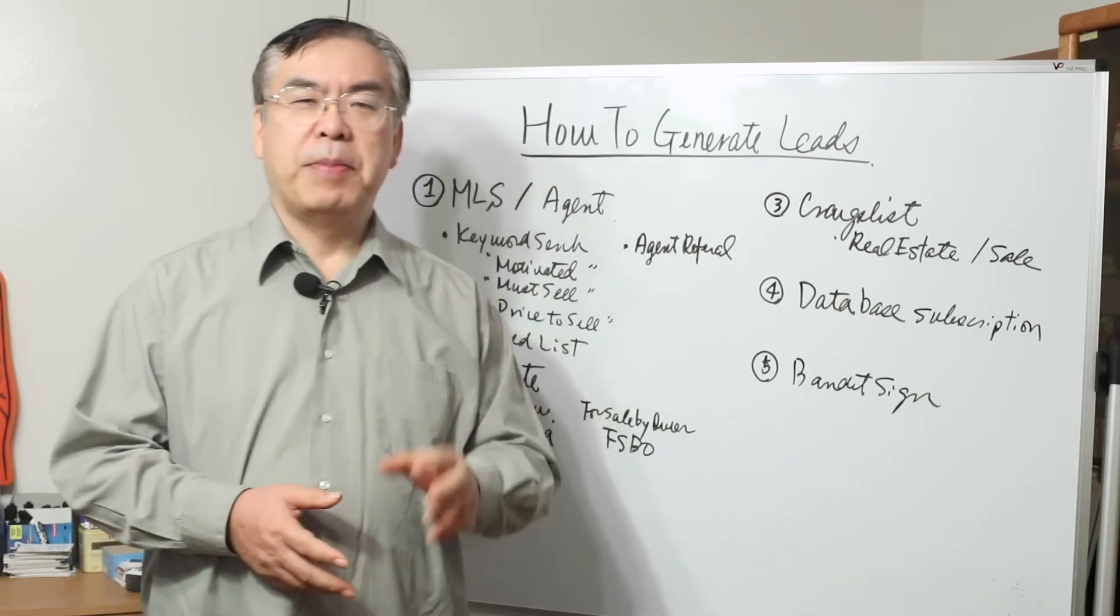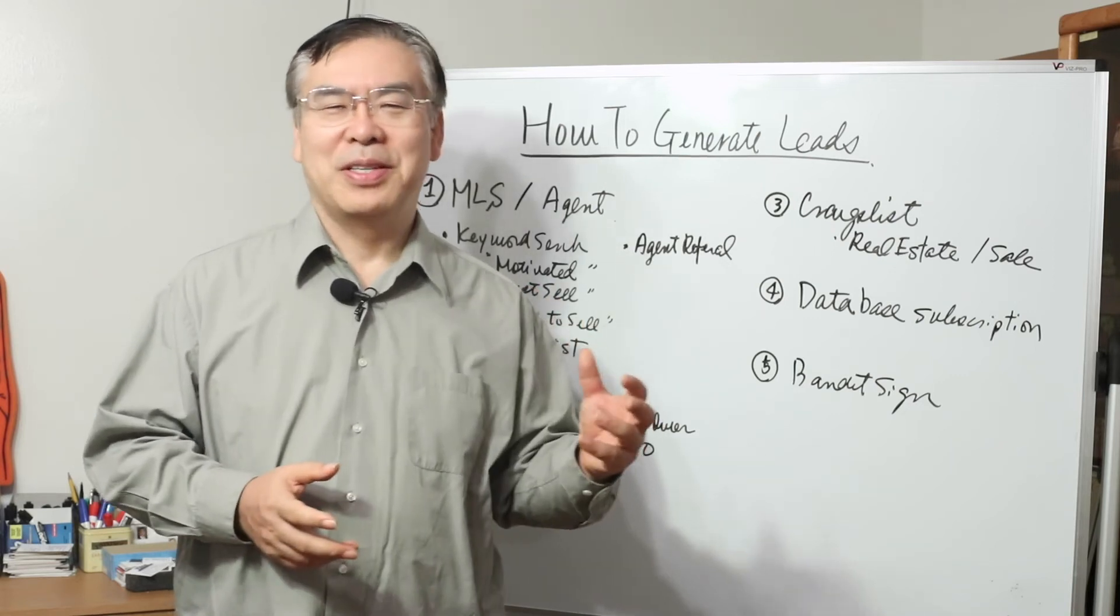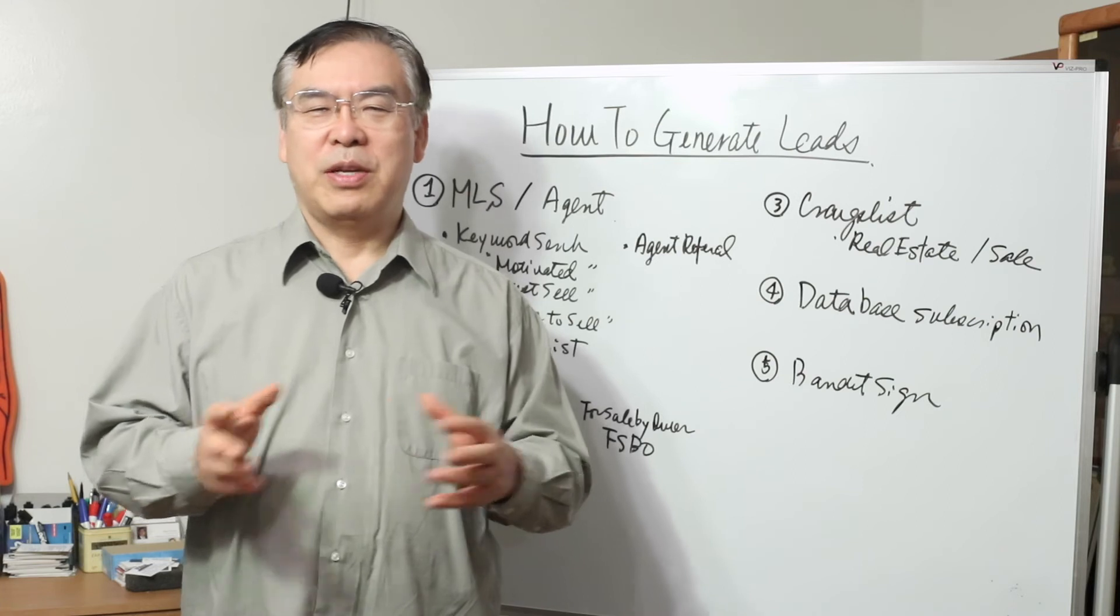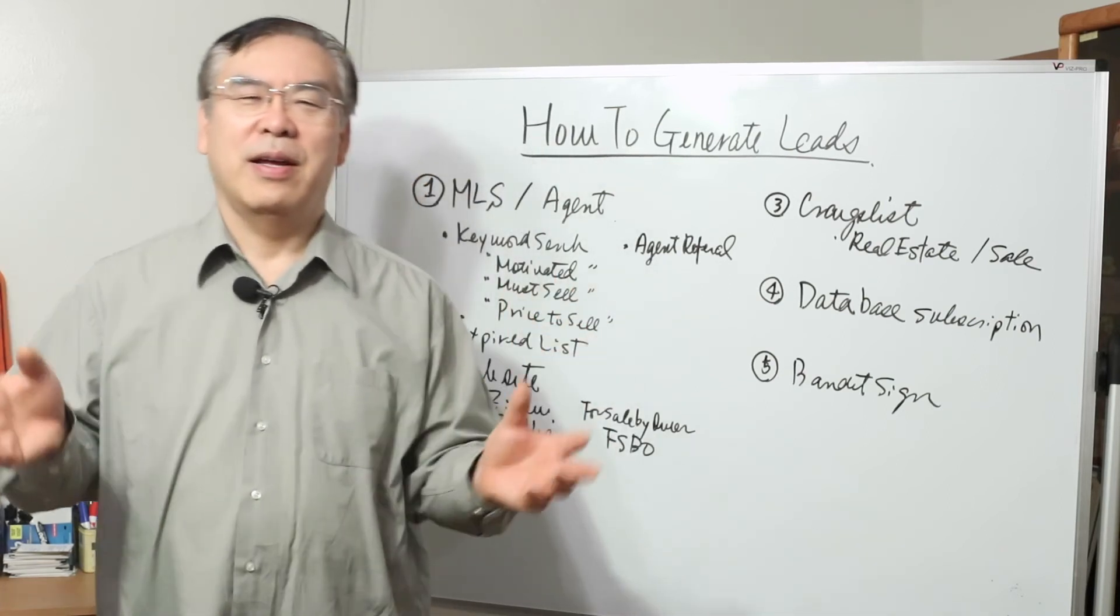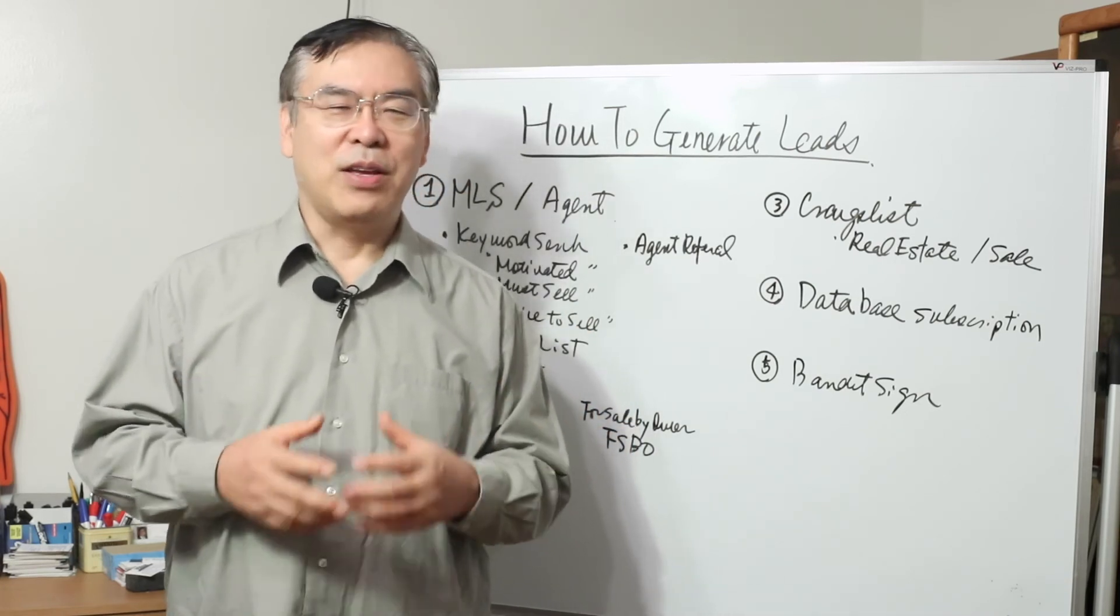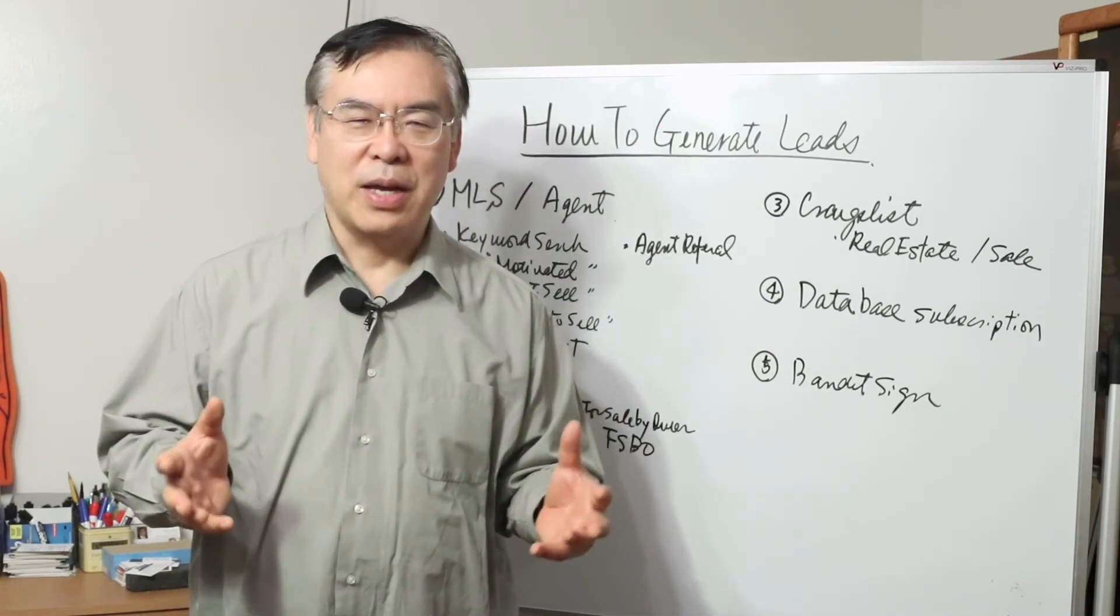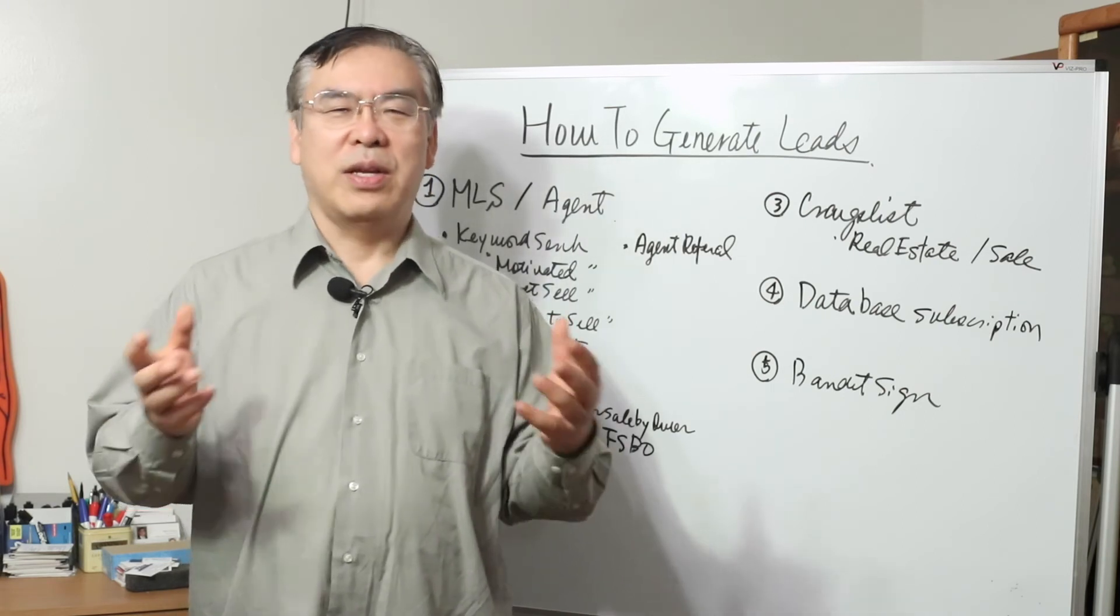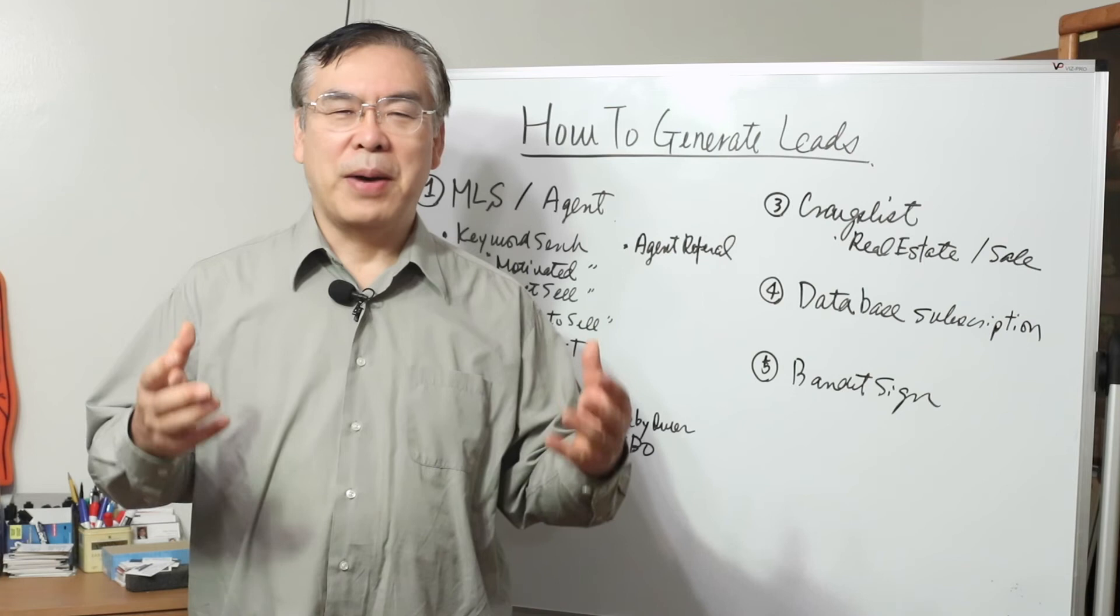Number five, bandit sign. If you go around the cities, you often see we buy houses, sell your home in seven days, stop foreclosure we buy houses, we can buy anytime in cash, any condition in cash. Those are very popular bandit signs to find leads. I often use those kinds of signs. Why do you think that you see bandit signs? Because it works. Many motivated sellers are calling those signs and asking if those people can buy their house.